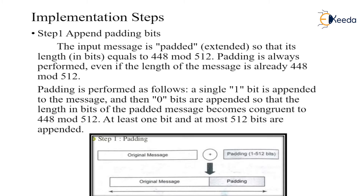The first implementation step in the message digest algorithm is to append the padding bits. These appended bits make the input message a multiple of 512 bits. The input message is padded — that is, extended — so that its length equals 448 mod 512. Padding is always performed even if the length of the message is already 448 mod 512. A single '1' bit is appended to the message, and then '0' bits are appended so that the padded message length becomes congruent to 448 mod 512.